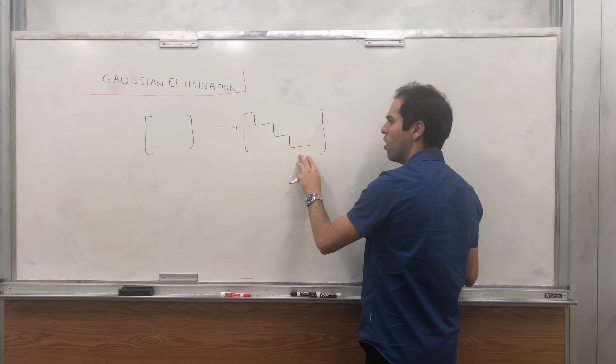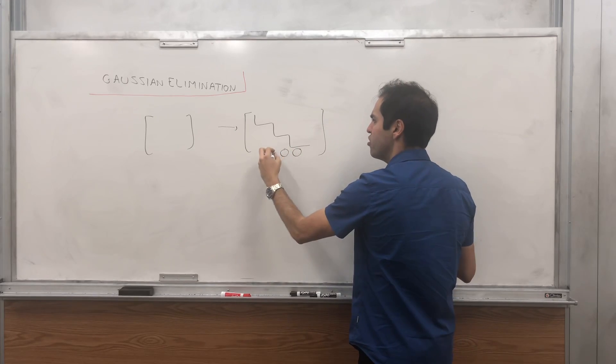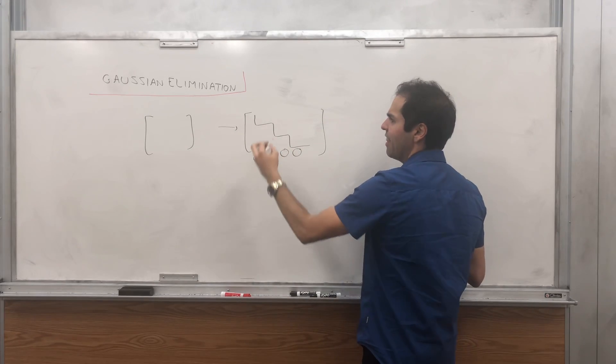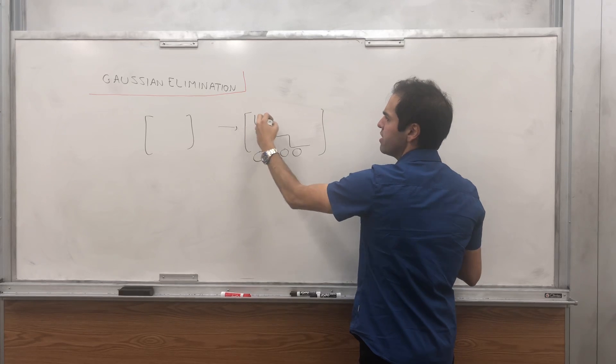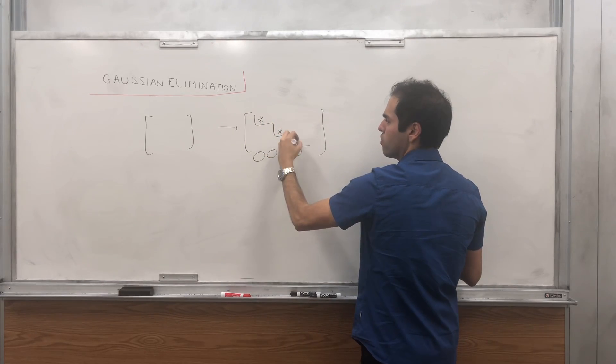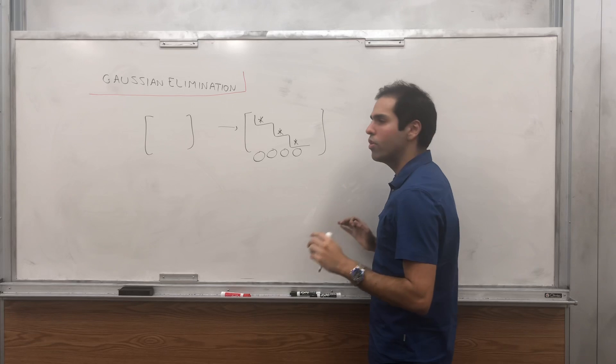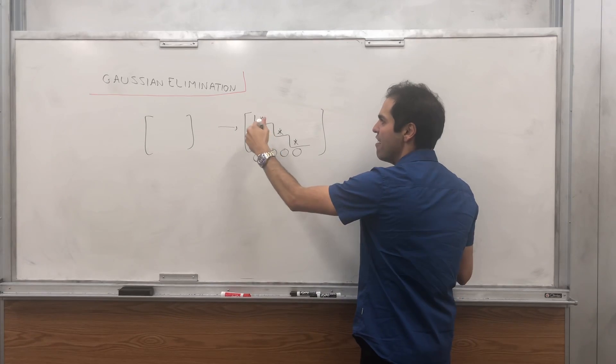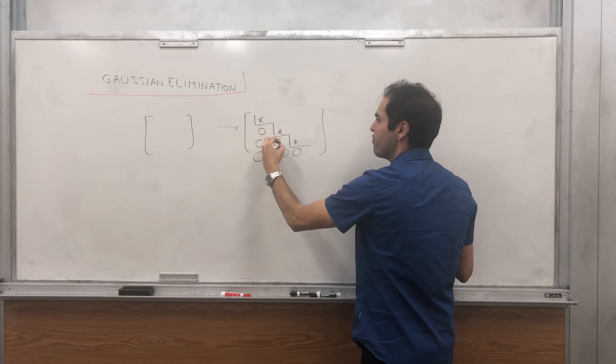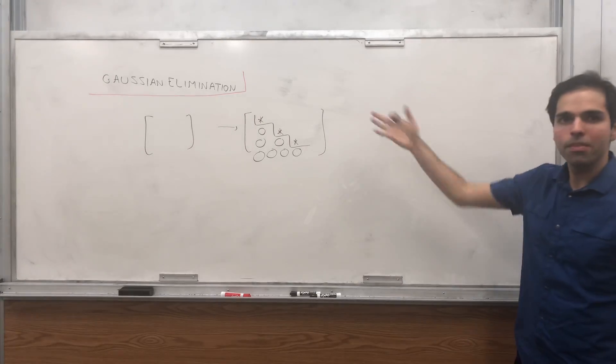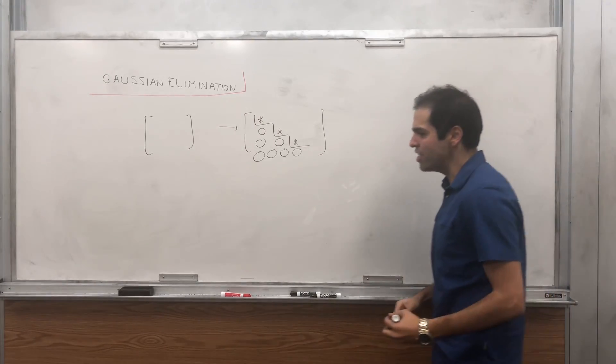First of all, the rows of zeros have to be at the bottom. And then the first non-zero entries in each row, we call them pivots, and everything below and to the left of a pivot has to be zero. So this is called row echelon form.